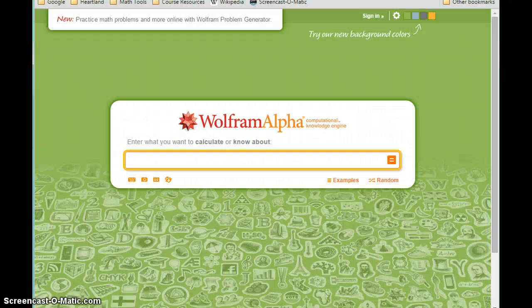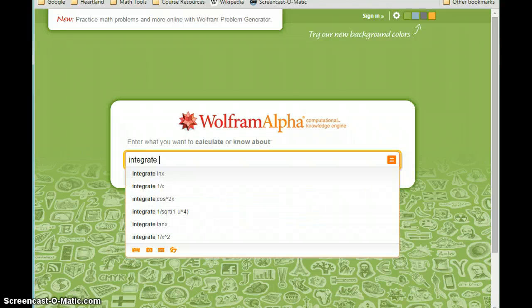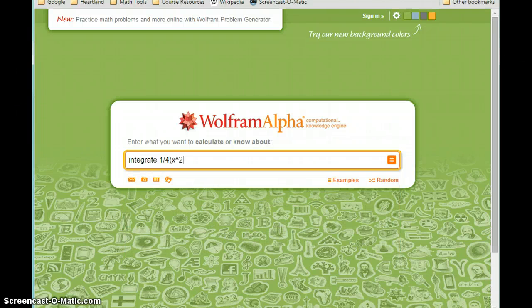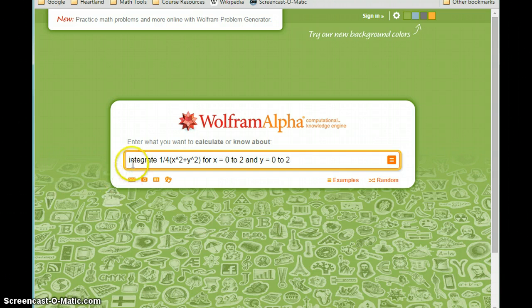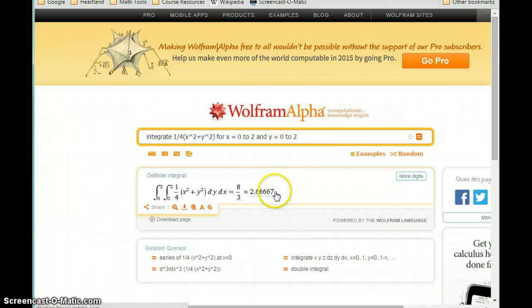We can evaluate this double integral by asking Wolfram Alpha to integrate 1/4 times (x²+y²) for x equals 0 to 2 and y equals 0 to 2. We're going to integrate that expression out front, 1 over (b-a)(d-c), which in this case becomes 1/4, times the function, and the range of values for both x and y.